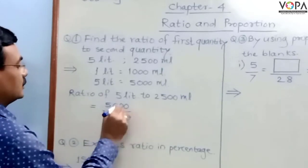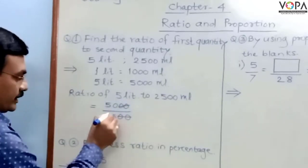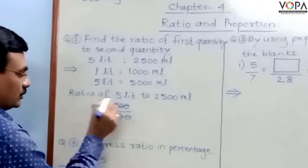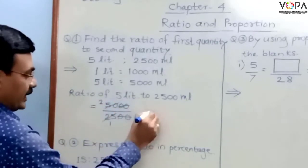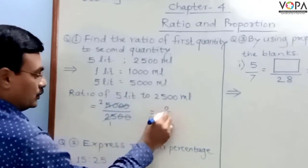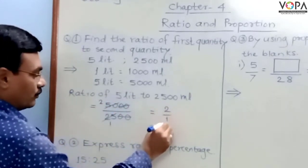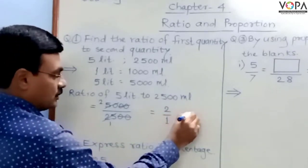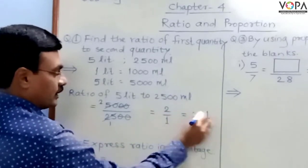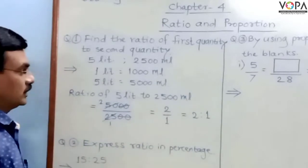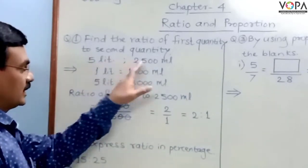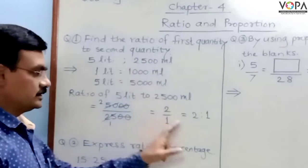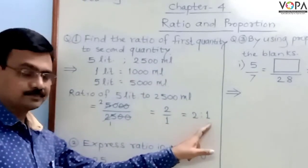Simplifying the numerator and denominator, after simplification you can write the answer as 2 upon 1, which can be written as 2 is to 1. So the ratio of 5L and 2500mL is 2:1.